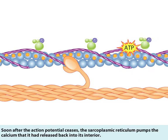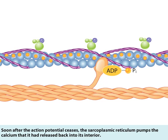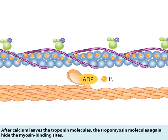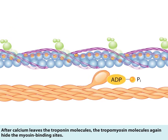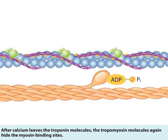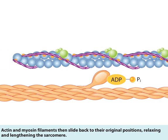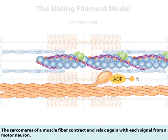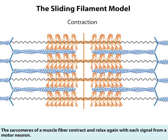After the action potential ceases, the sarcoplasmic reticulum pumps the calcium that it had released back into its interior. After calcium leaves the troponin molecules, the tropomyosin molecules again hide the myosin binding sites. Actin and myosin filaments then slide back to their original positions, relaxing and lengthening the sarcomere. The sarcomeres of a muscle fiber contract and relax again with each signal from a motor neuron.